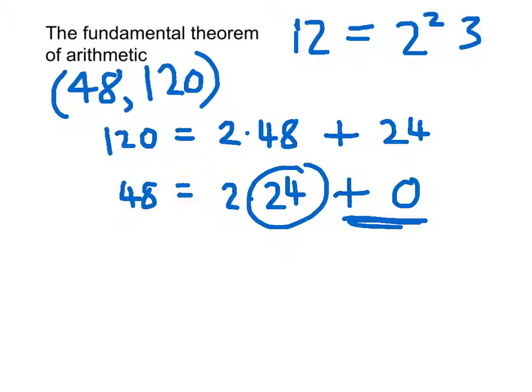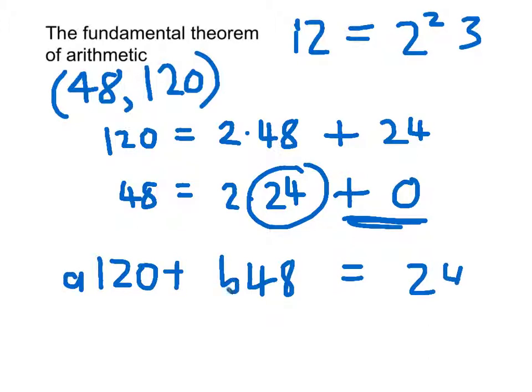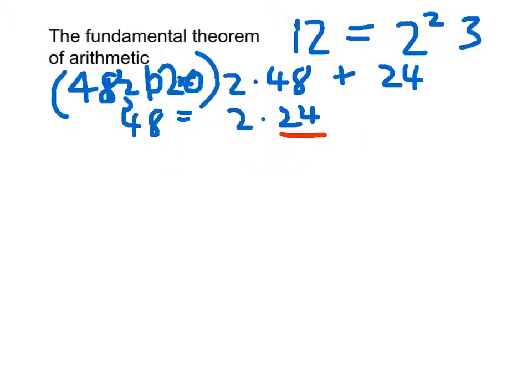Now I can write 24 in the form something times 120, and something times 48 will equal 24. I'll call that A add B. How do I do that? It's essentially working backwards. 24 equals, this is from the first line, 24 equals 120, subtract 2 times 48, and that basically is the answer.